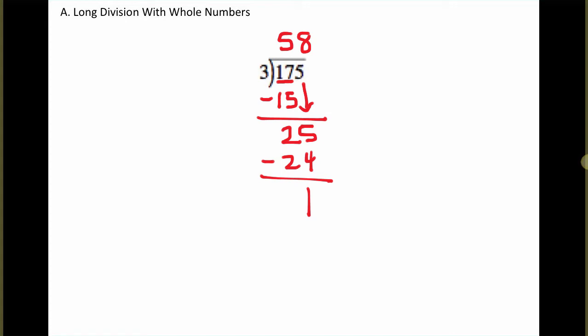Now since 1 is less than 3, we could keep going and get a decimal, but in this case, we're just going to call this the remainder. With this long division, our answer could be 58 remainder 1, or if you wanted to write it as a fraction,